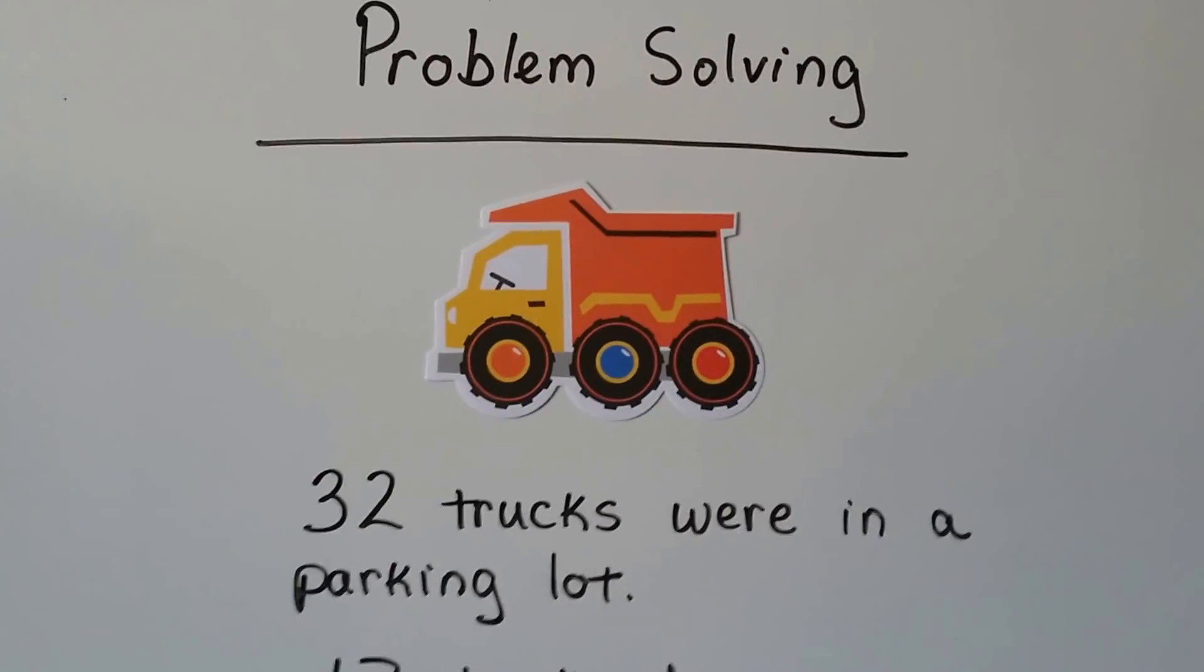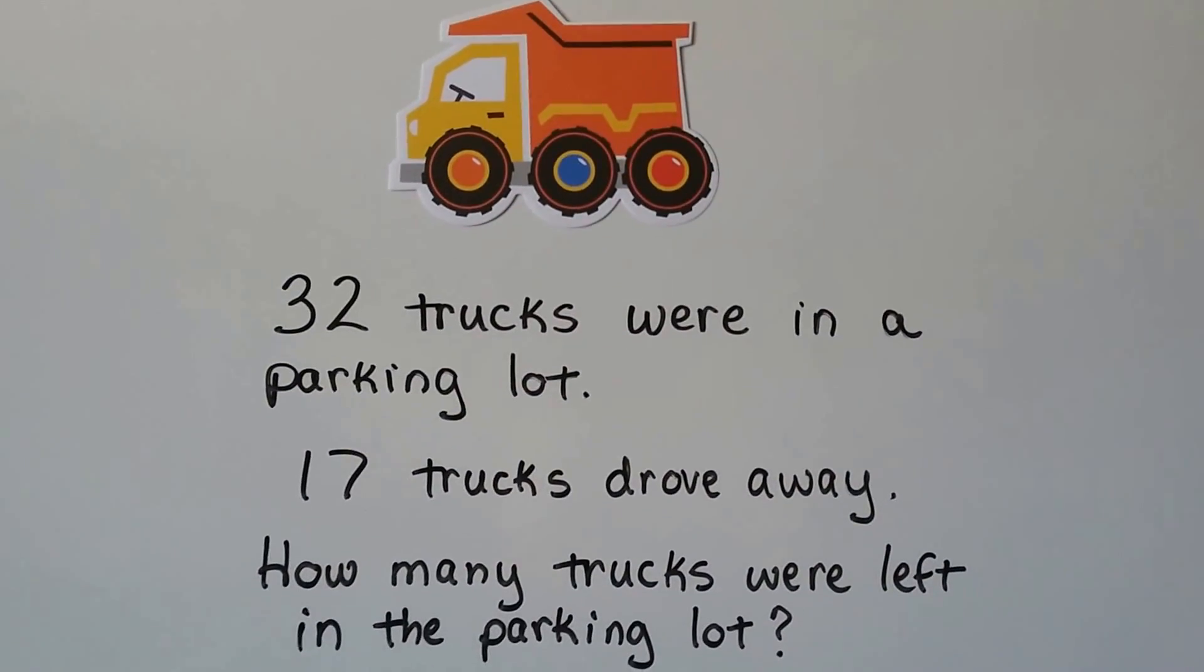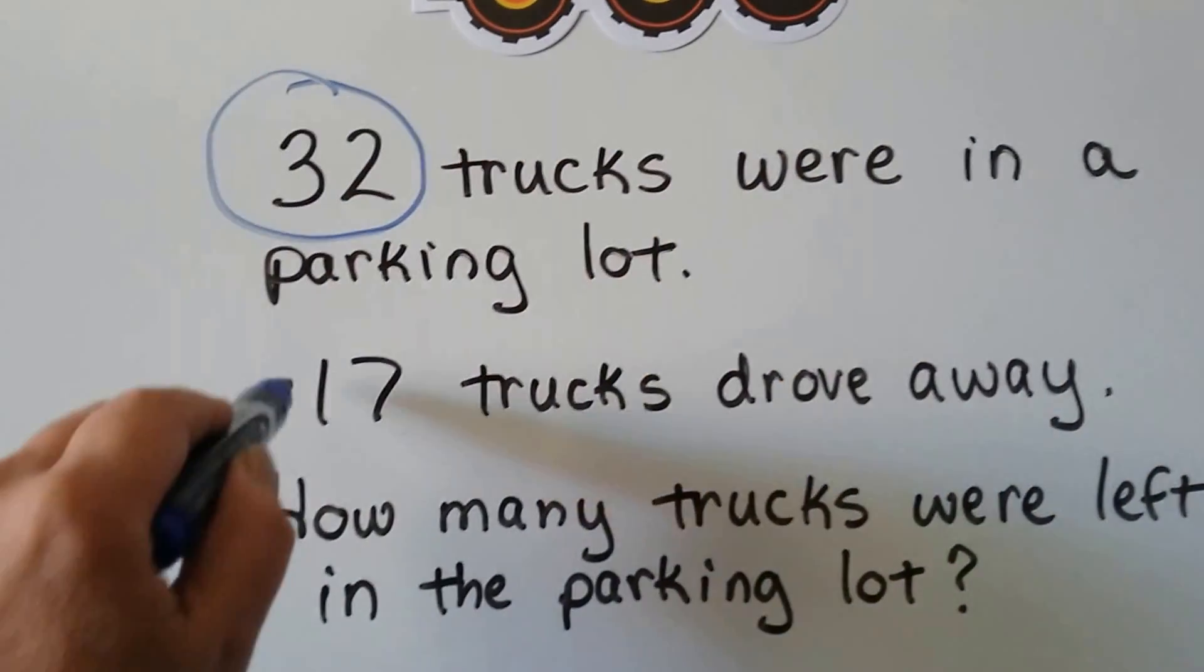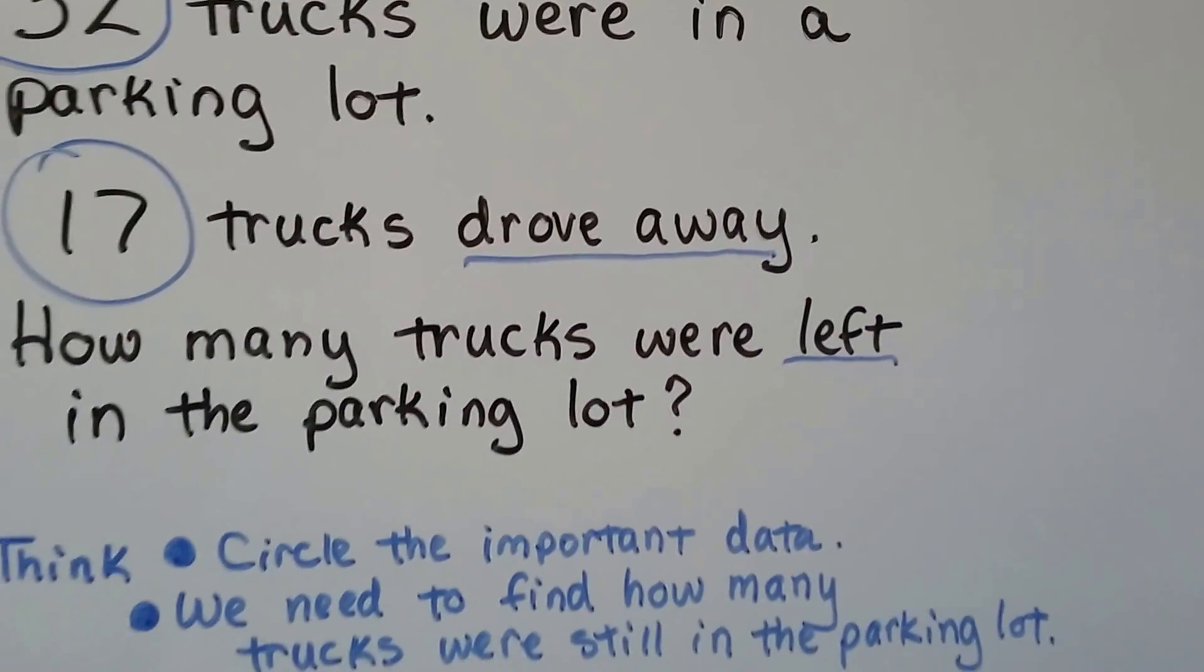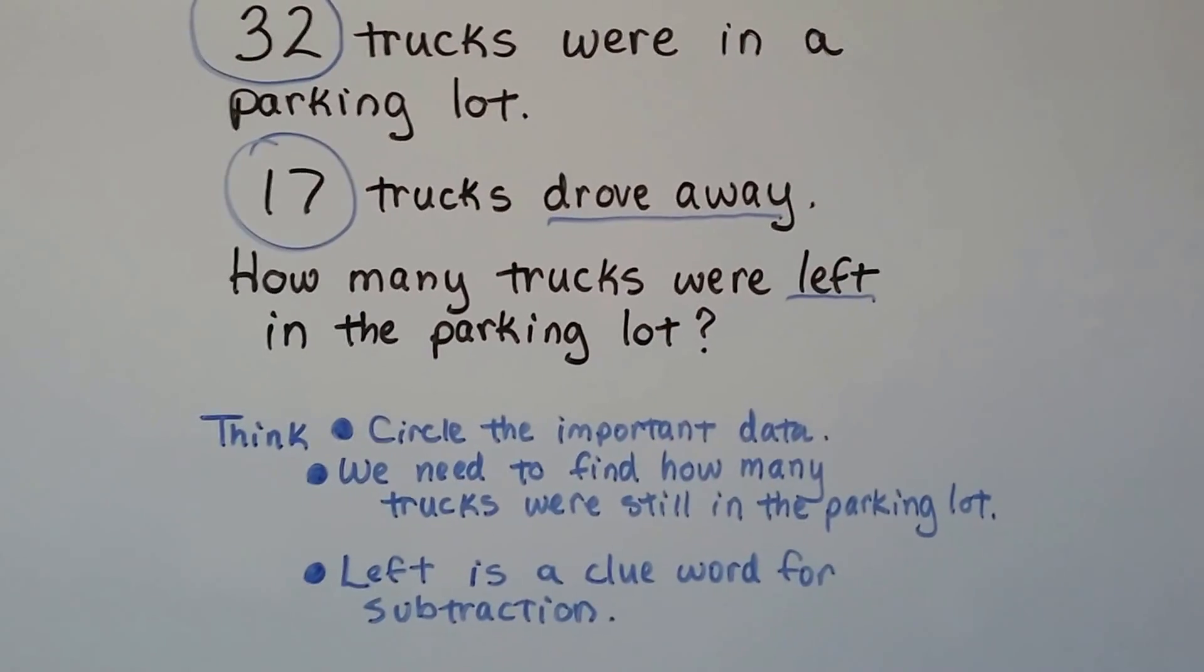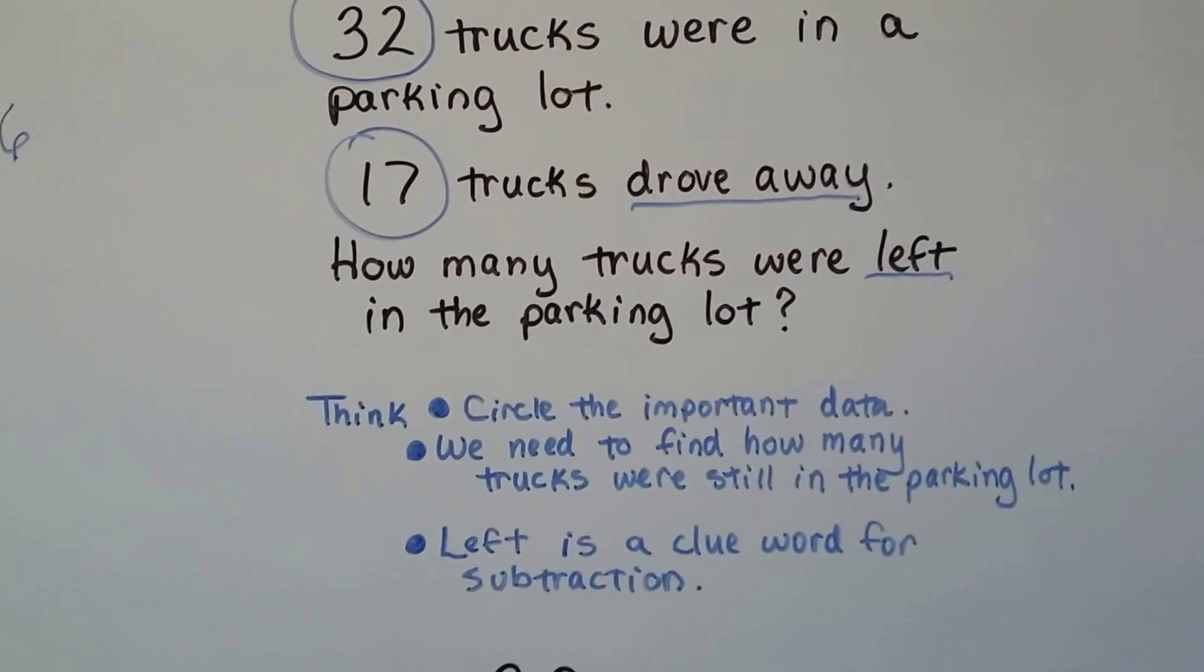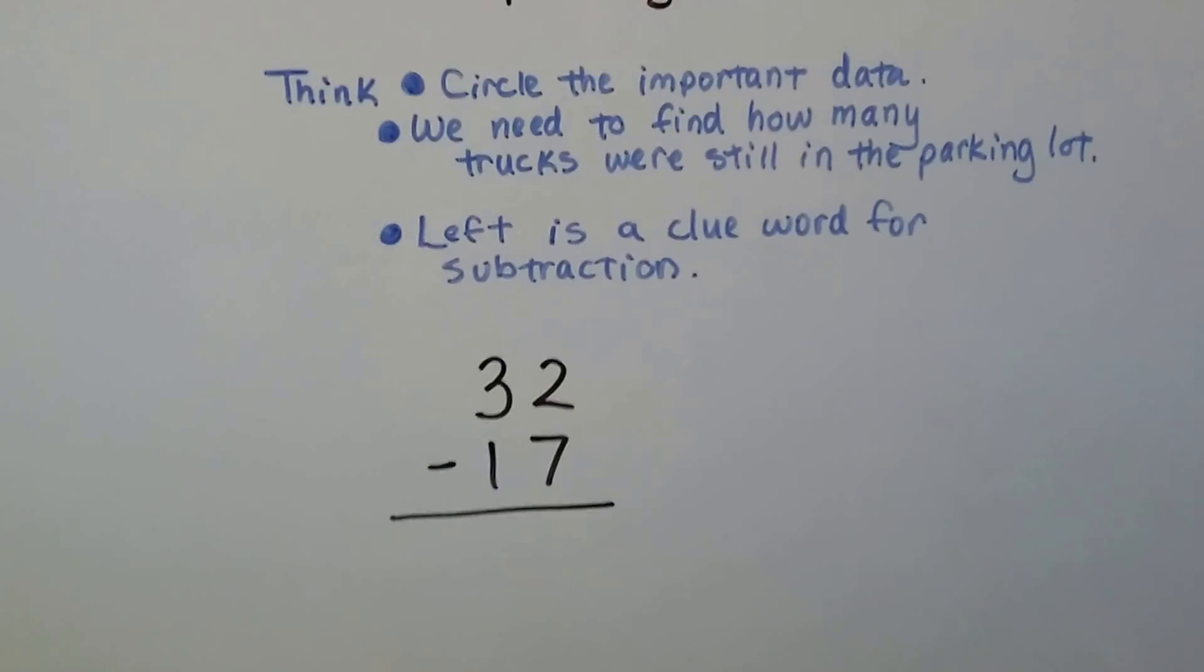Let's try some problem solving. 32 trucks were in a parking lot and 17 trucks drove away. How many trucks were left in the parking lot? So we need to think. We need to circle the important information, the important data. So what's important is that we're 32. What's important is that 17 drove away and they want to know how many are left. We need to find out how many trucks are still in the parking lot. Left is a clue word for subtraction. So is the drove away that told us that there were 17 that are now gone.